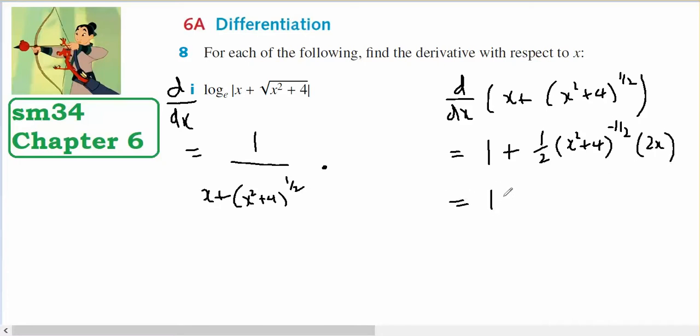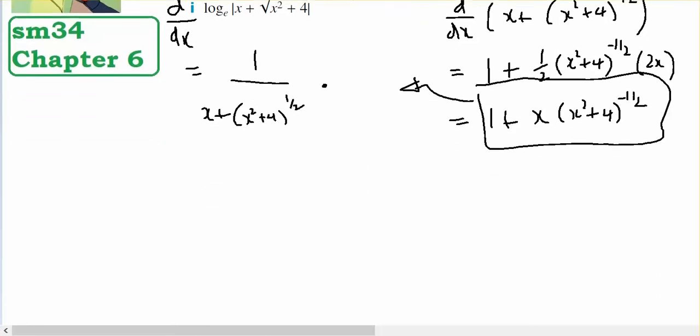The twos will cancel to leave 1 plus x over x squared plus 4 to the negative a half, and that's what will go there. So what do we got?